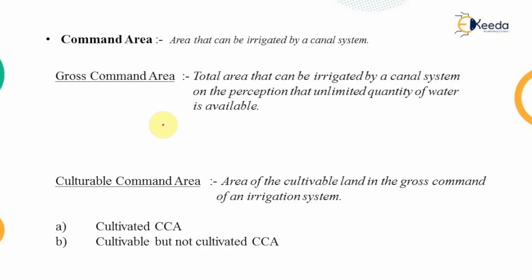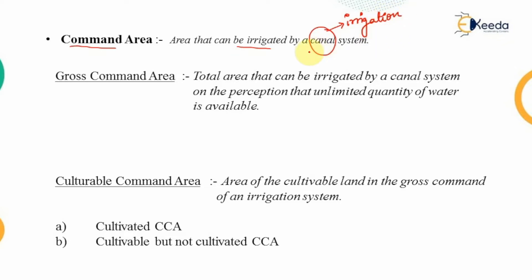Before studying about the irrigation schemes we need to understand a few terms associated with it. The first is the command area. The area that can be irrigated by a canal system — here we are referring to the irrigation system — how much area can be irrigated by that system is known as the command area.